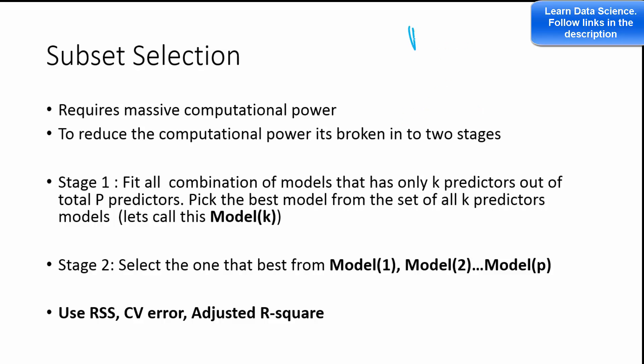That's subset selection and it's very difficult because if p is 3 then total models is going to be 2 to the power 3, which is 8. If p is 4, then it's going to be 16. If p is 5, it's going to be 32. But if p is 10, you are going to have a very huge number of models and that's very difficult. It requires massive computational power.